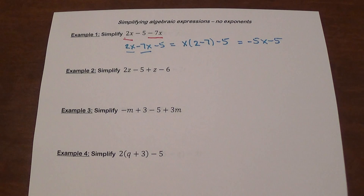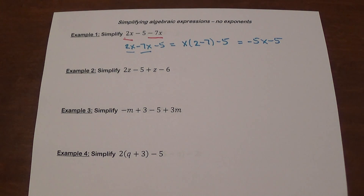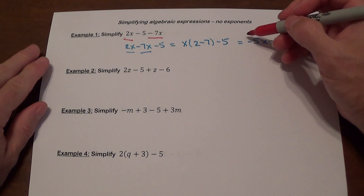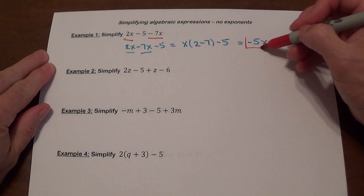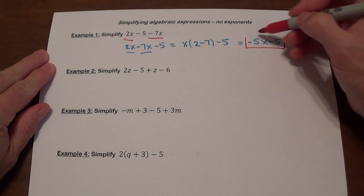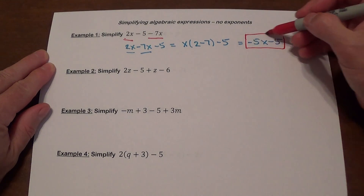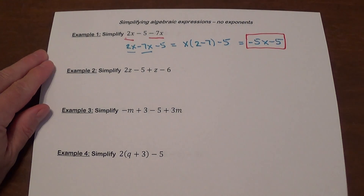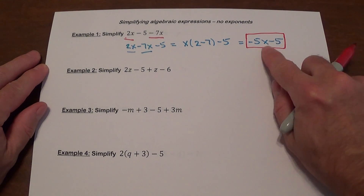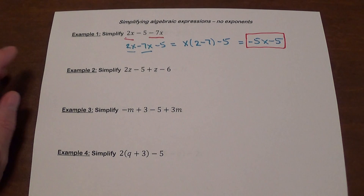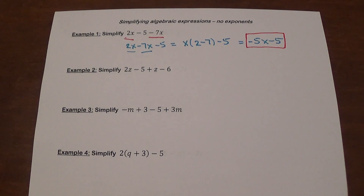Please keep in mind that these problems with rare exceptions are going to give you an algebraic answer, which means you are not expecting just a number. These two things cannot be combined at all because one of them has a variable and the other one does not.